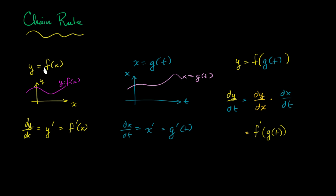So you can kind of view it as the derivative of this outer function, the derivative of this outer function with respect to the inner function, times the derivative of the inner function, times g prime of t.